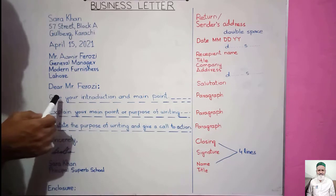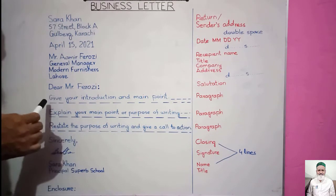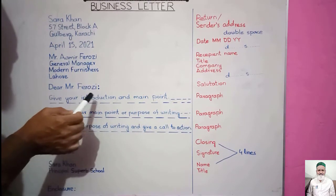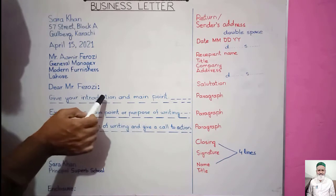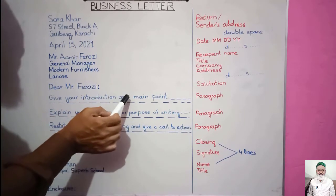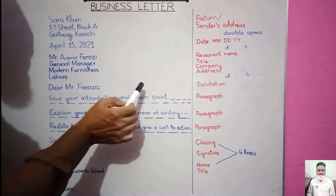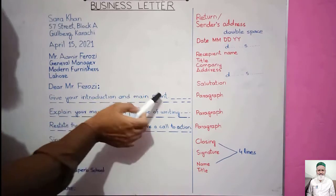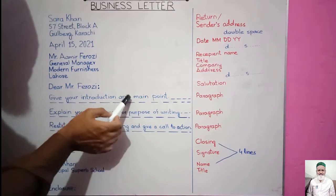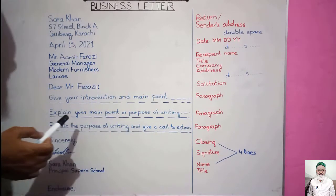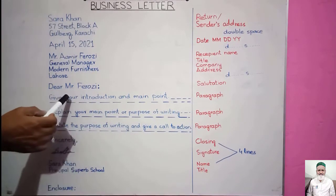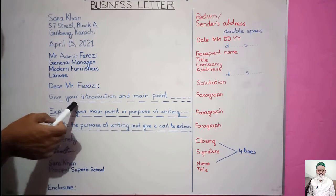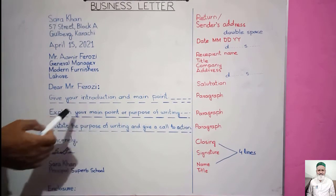In the first paragraph, the writer introduces themselves and briefly states the main purpose of writing the letter. After paragraph one, we again give double spacing — leaving one line — and then the second paragraph begins.